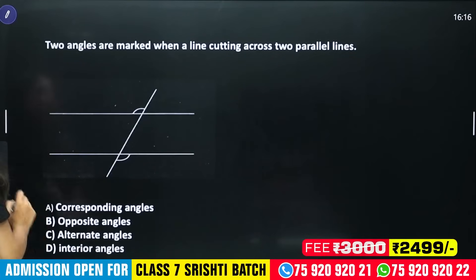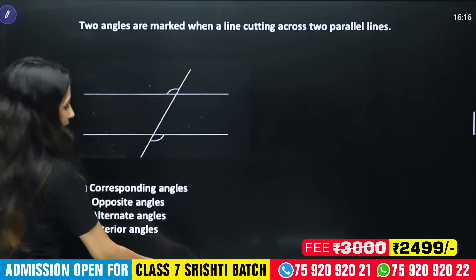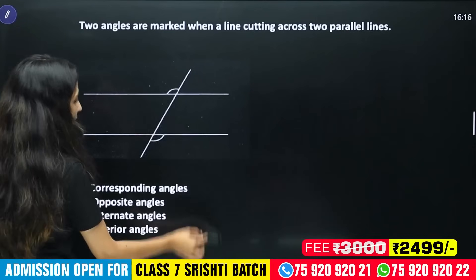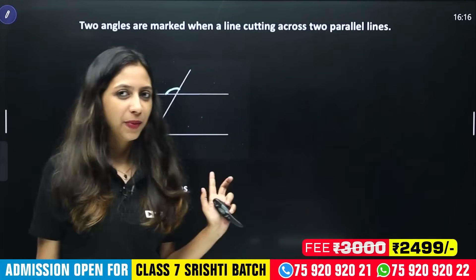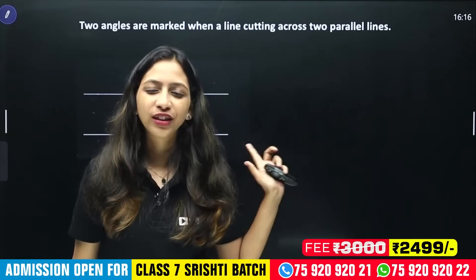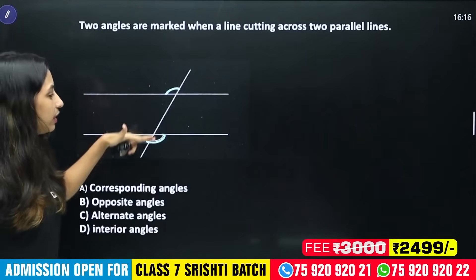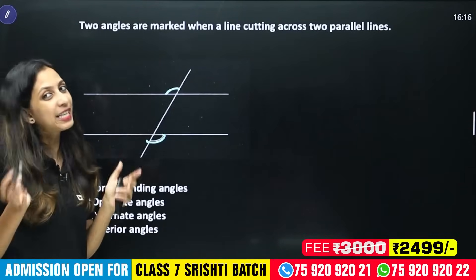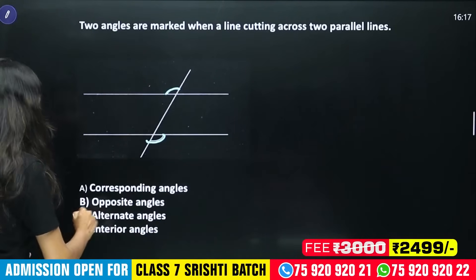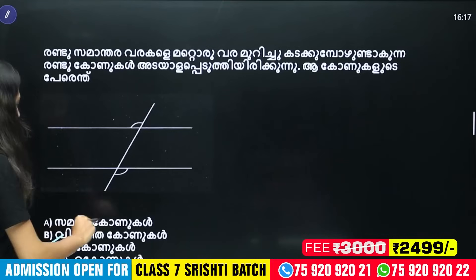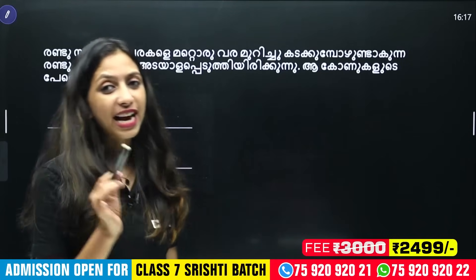When two angles are marked on opposite sides of the transversal between the two parallel lines, these are called alternate angles. Alternate angles are equal.